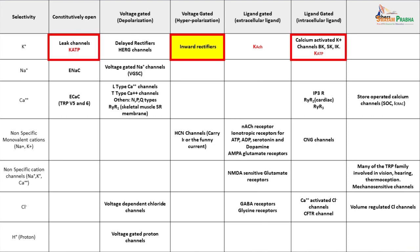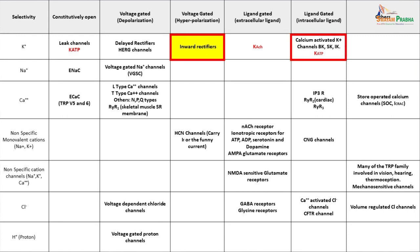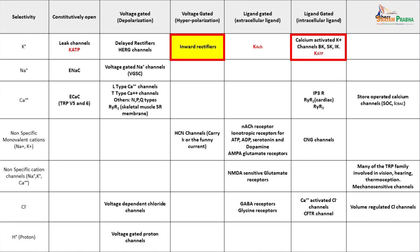There are primarily two inward rectifier potassium channels. One is the K-ATP channel, shown in red, and the second is the potassium acetylcholine or K-ACH channel. The K-ATP channel is shown as a ligand-gated channel by an intracellular ligand and is also constitutively open at the resting membrane potential. The K-ACH channel is a ligand-gated channel gated by an extracellular ligand. Let us look a little more about these channels in detail.